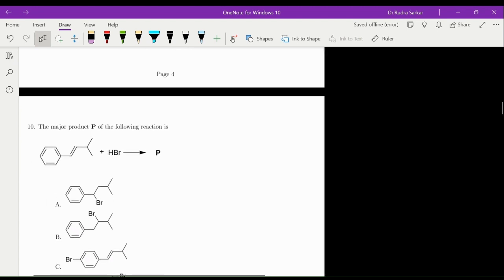The major product P of the following reaction is, so this is again related to electrophilic addition reaction. So the pi bond will attack the proton, and what we can expect is the formation of the most stable carbocation over here. So the proton adds over here. Now this carbocation is resonance stabilized. So now finally, the Br minus will attack, and the product that we will get is going to be A.